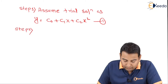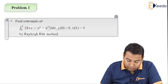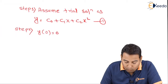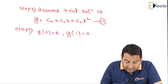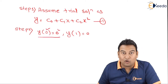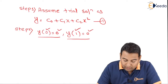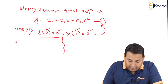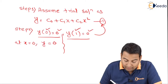The given initial conditions are y(0) = 0 and y(1) = 0. This means at x = 0, y = 0 (first condition), and at x = 1, y = 0 (second condition). Let us substitute these into equation 1.